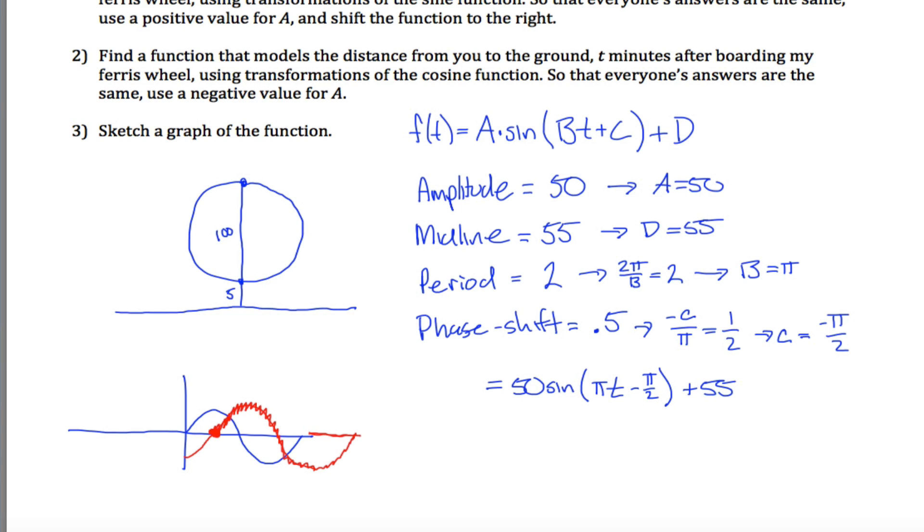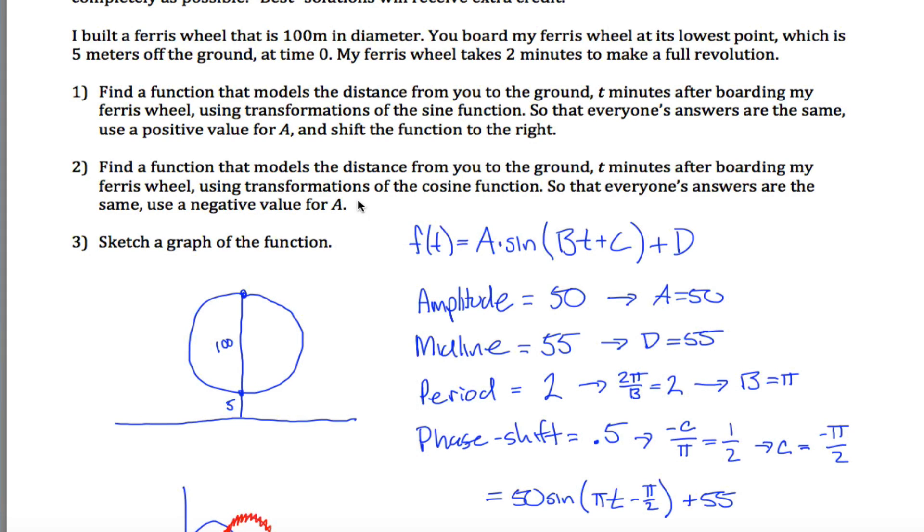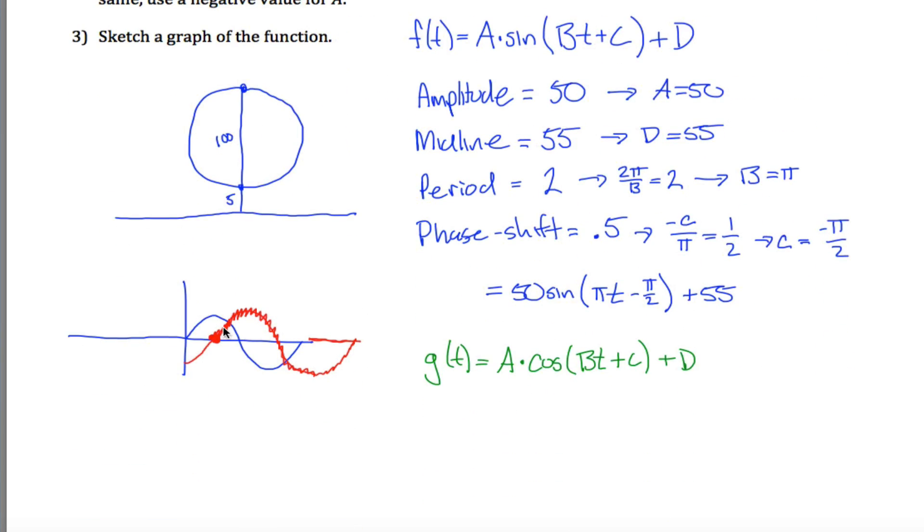So this would be the answer to part A. For part B, it's a little bit different, but I'll be able to reuse most of my stuff. Maybe I'll call it G of T here. And it's now A times the sine of, not the sine, the cosine, B times T plus C plus D. The only difference in part 2 is this model using the cosine, so things will be a little bit different. Oh, and by the way, using negative value for A. So that'll make life a little bit easier.